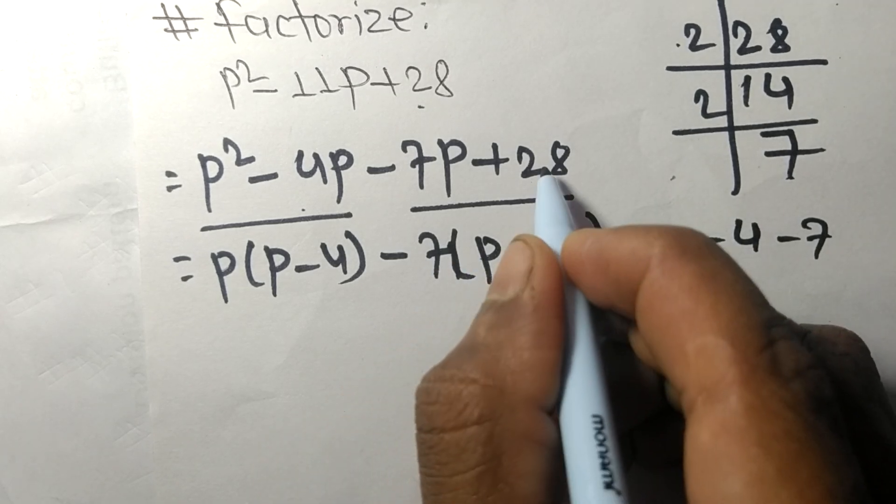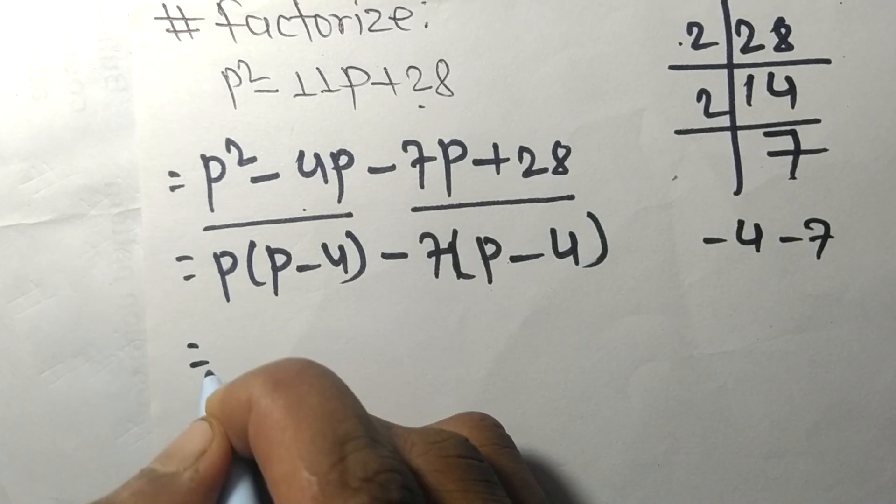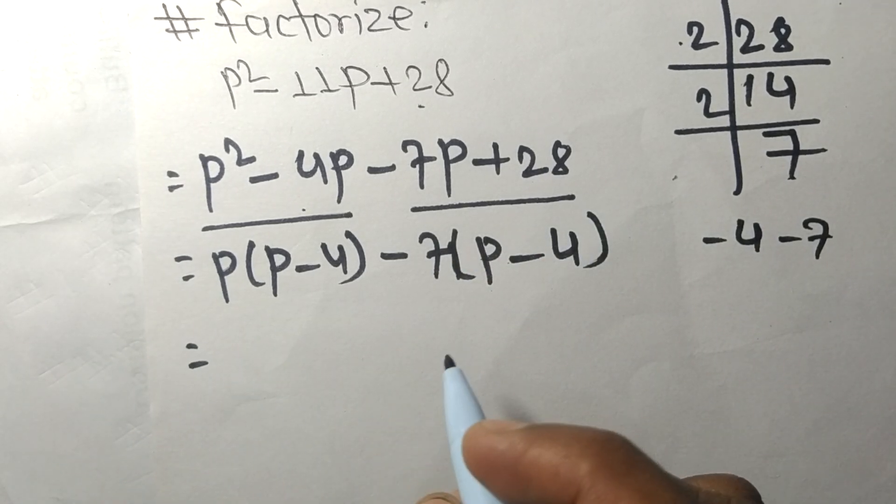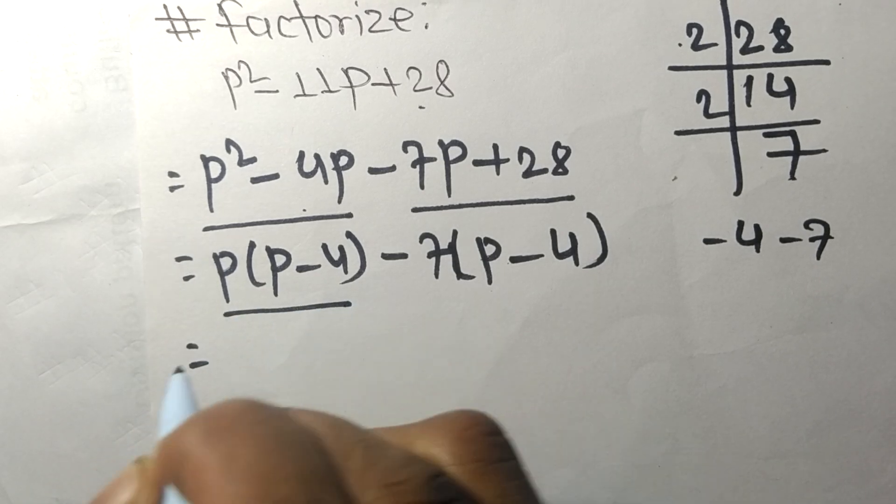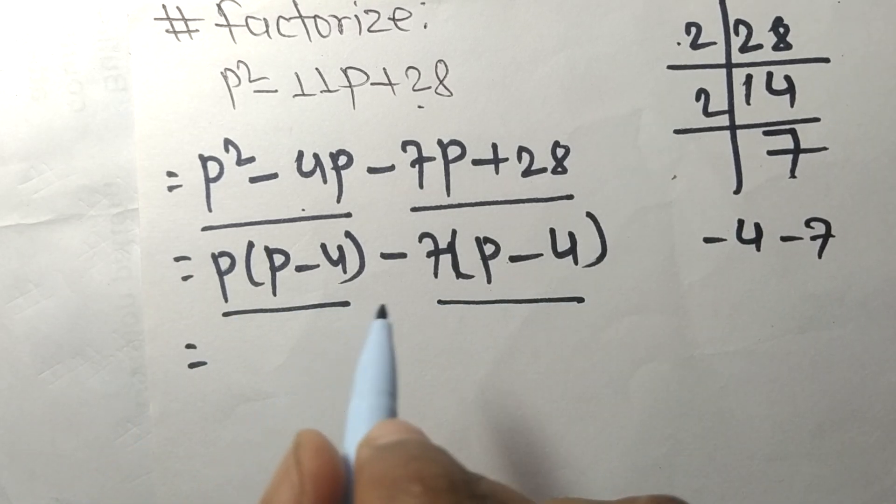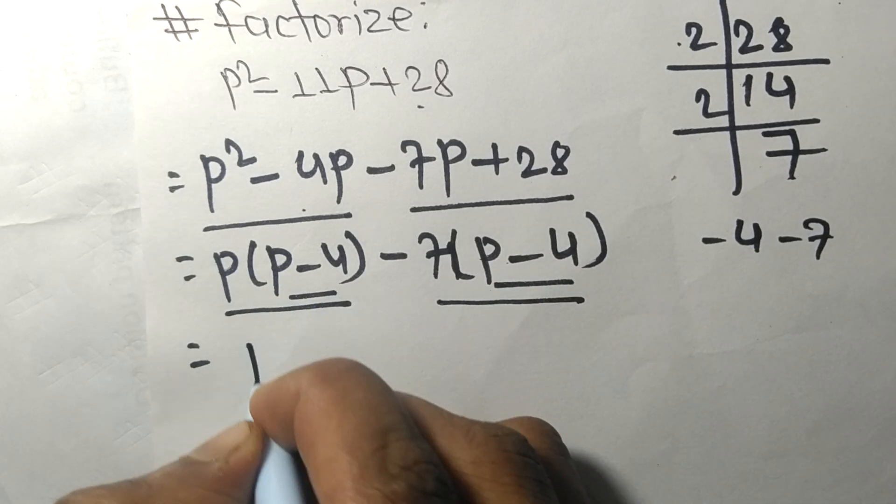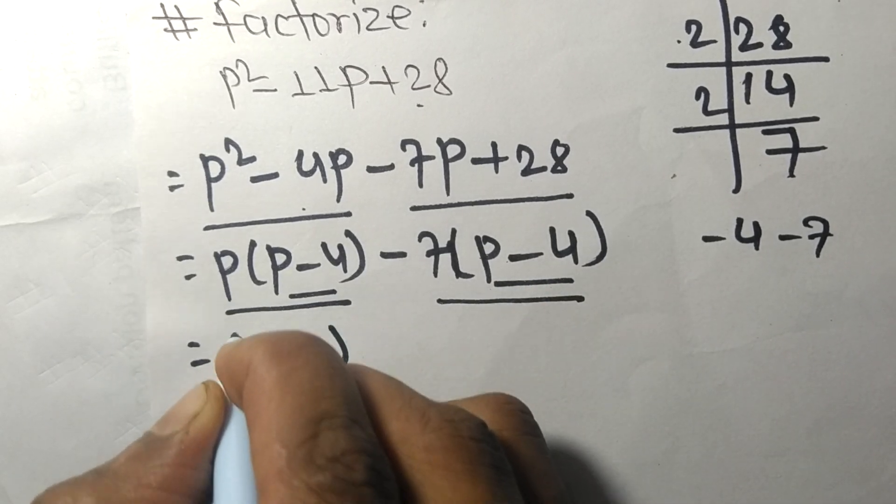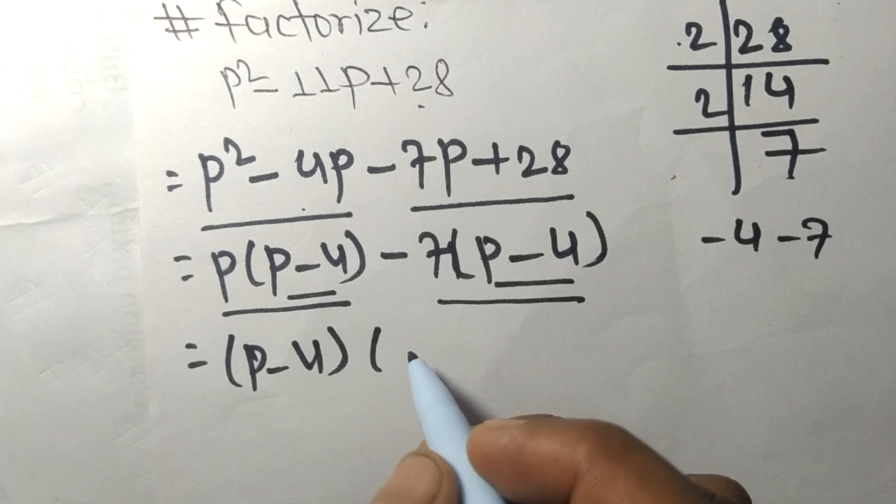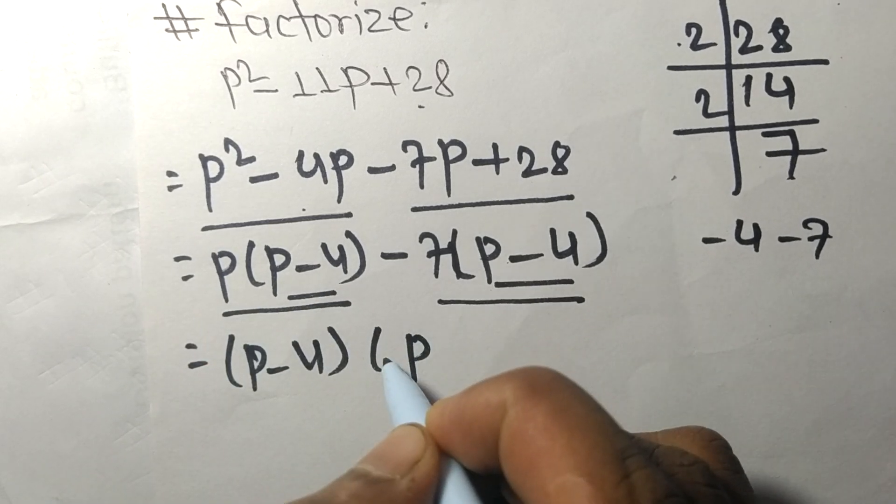Now we again find the common factor in the first expression and last expression. Both contain P minus 4, so P minus 4 is common, and the remainder in the first is P and at last is minus 7.